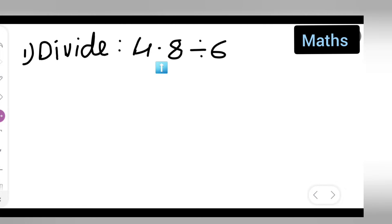Take down the question: divide 4.8. Now this number is with a decimal point and this is without decimal point. Let us see how to divide this. First write down: